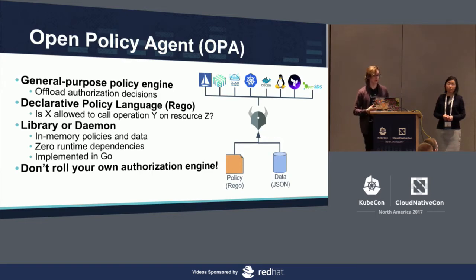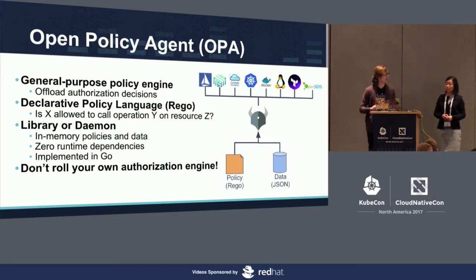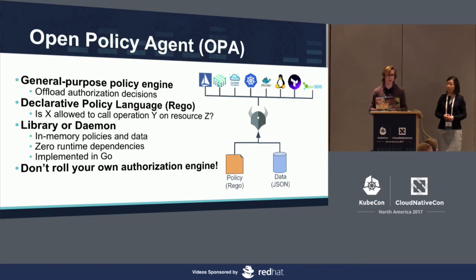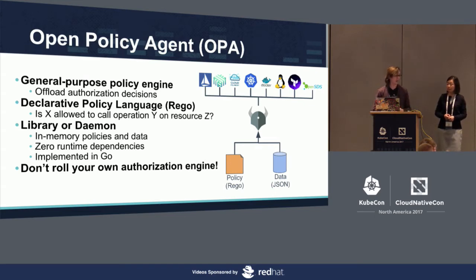You can use OPA for things like Kubernetes, Cloud Foundry, Docker, and so on, but here we're focusing on Istio and this new integration. The core of OPA is a declarative language that lets you codify your policies, answering questions like: is X allowed to call Y on Z? When using OPA, you can take it as a library and embed it into your applications, or run it as a sidecar, or run it on a host and have all your services call into it for policy decisions.